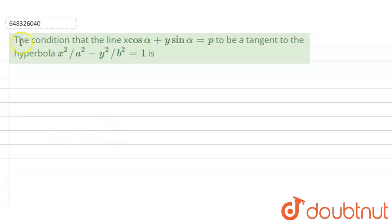Hello everyone, let's start the question. The question says that the condition that the line x cos α plus y sin α equal to p to be a tangent to the hyperbola x²/a² minus y²/b² equal to 1.